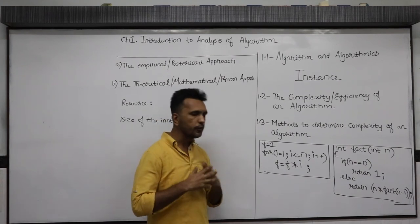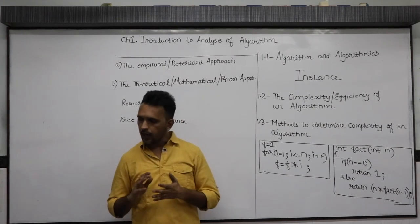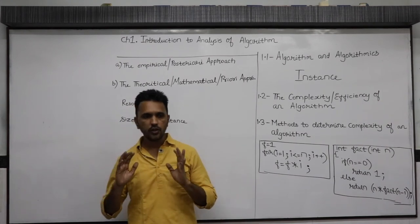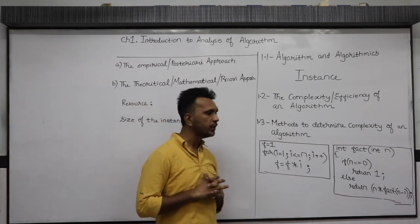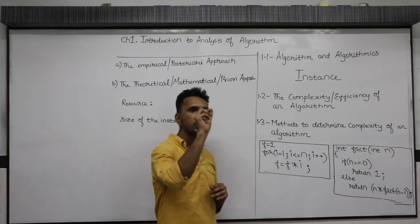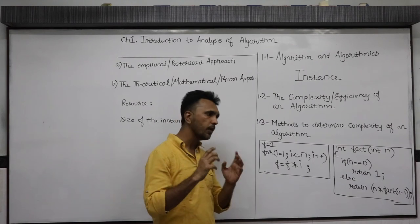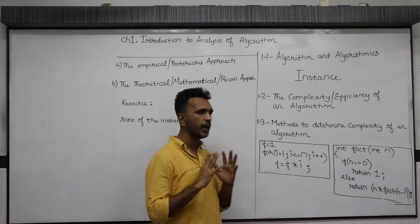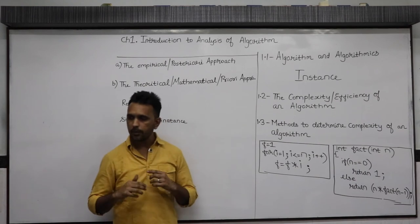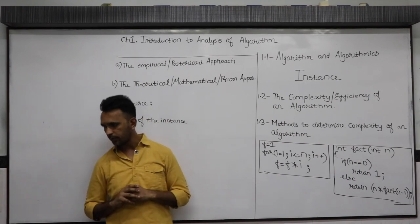There is another way of defining an algorithm. An algorithm is a set of operations which performs one particular task. Basically, when you perform certain operations to perform one particular task, it becomes an algorithm. Those operations may perform the task of finding the factorial of a number.